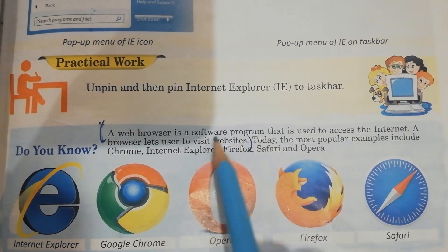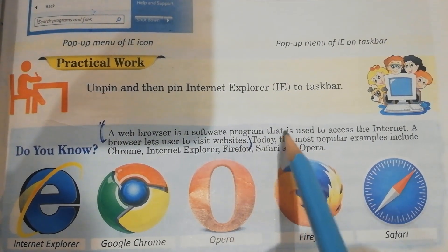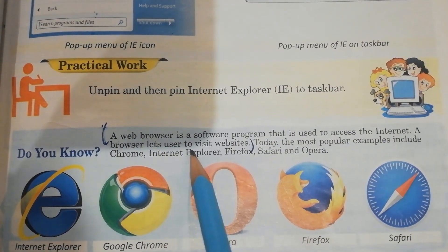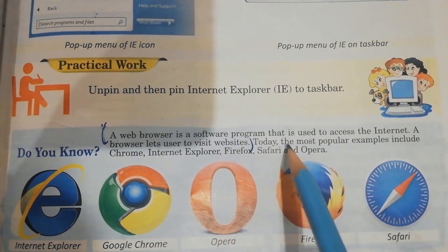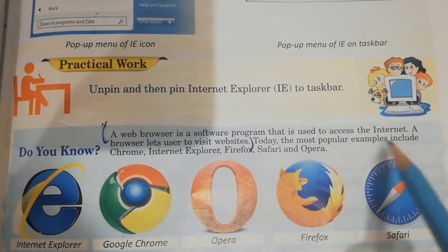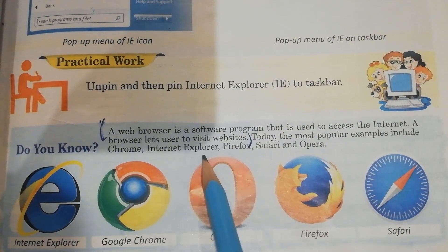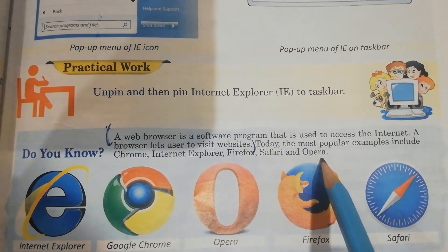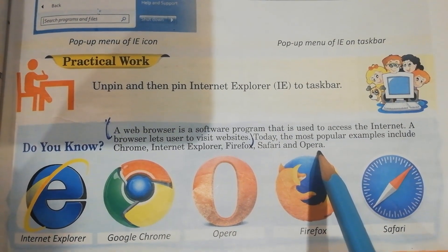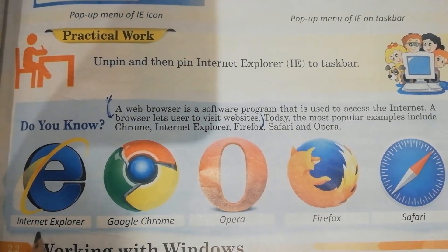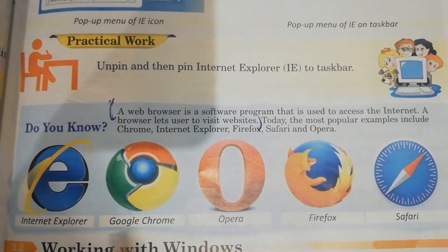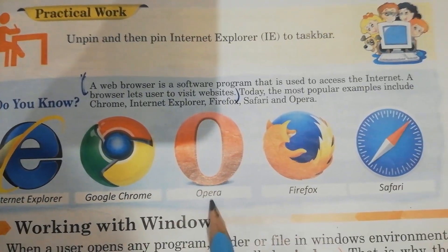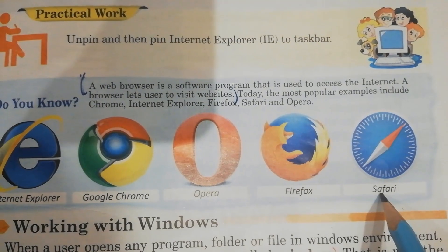Here you can see the proper definition of a web browser: a web browser is a software program that is used to access the internet; a browser lets users visit websites. Today the most popular examples include Chrome, Internet Explorer, Firefox, Safari, and Opera. Here you can see different web browsers with their icons: Internet Explorer, Google Chrome, Opera, Firefox, and Safari.